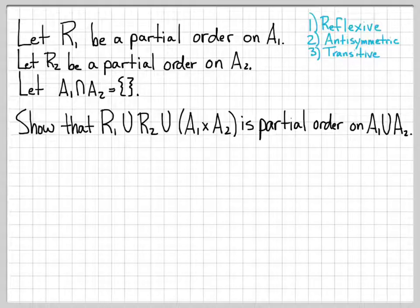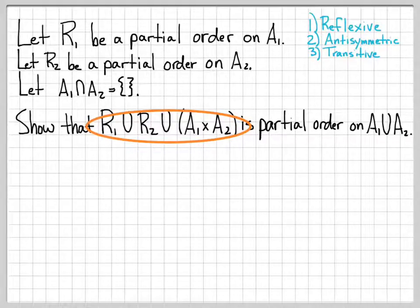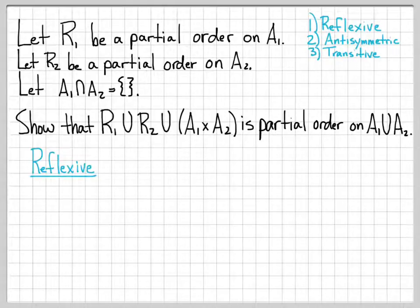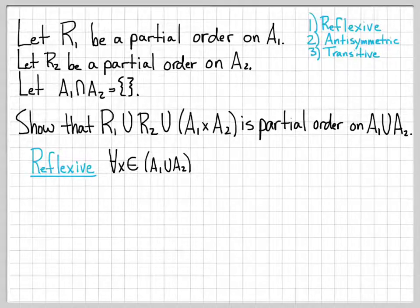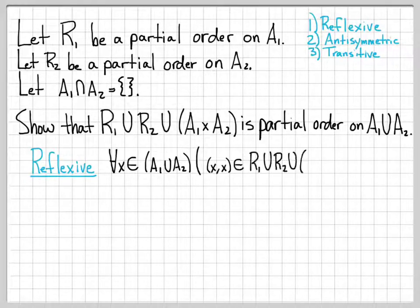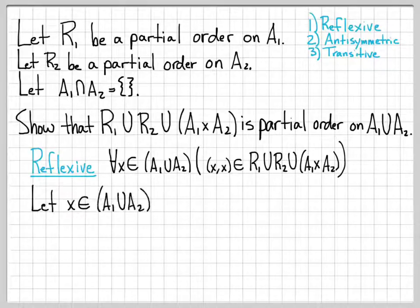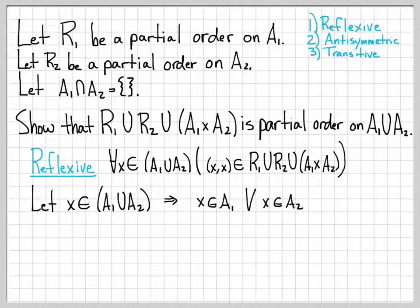To establish that, we're going to work through and show this quantity has these three properties. Let's start with the first property, reflexivity. To show R1∪R2∪(A1×A2) is reflexive on A1∪A2, we need to show that for all X in A1∪A2, the pair (X,X) is in R1∪R2∪(A1×A2). We choose an arbitrary X in A1∪A2, which means X is in A1 or X is in A2, and we analyze each case independently.